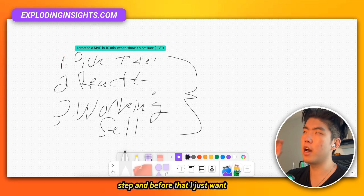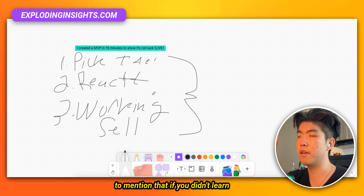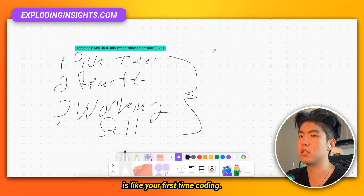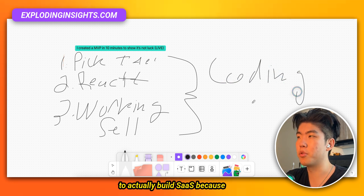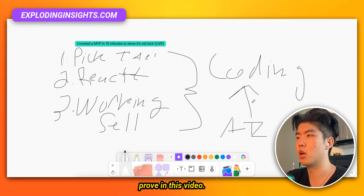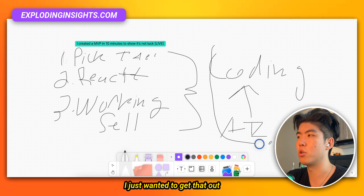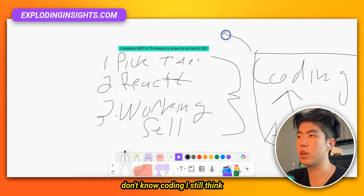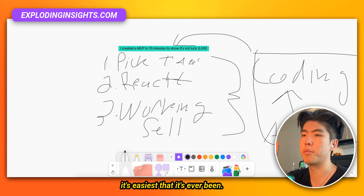Before that, I just want to mention that if you didn't learn programming in college and this is your first time coding, I think right now is the best time to actually build SaaS because it's so easy to build with AI, which I'm going to prove in this video. Even if you don't know coding, it's the easiest it's ever been.